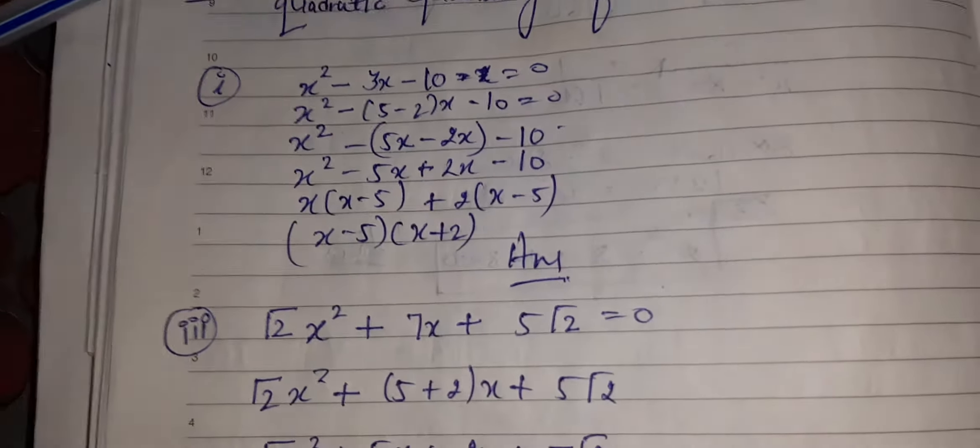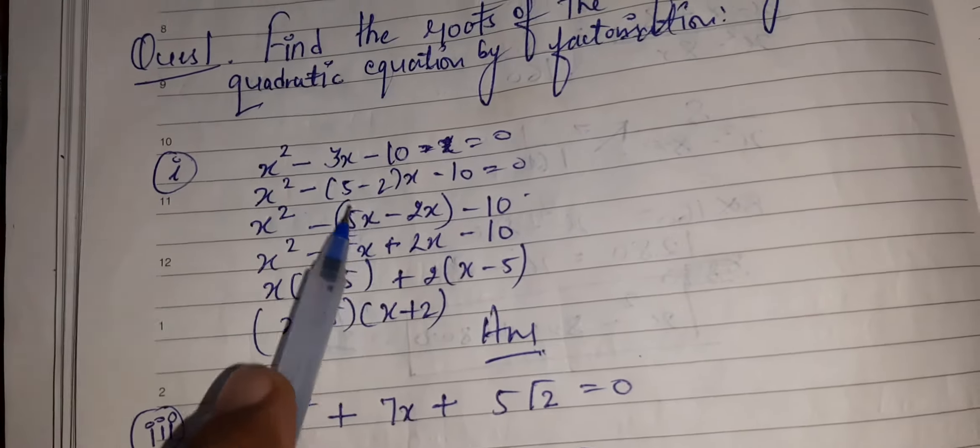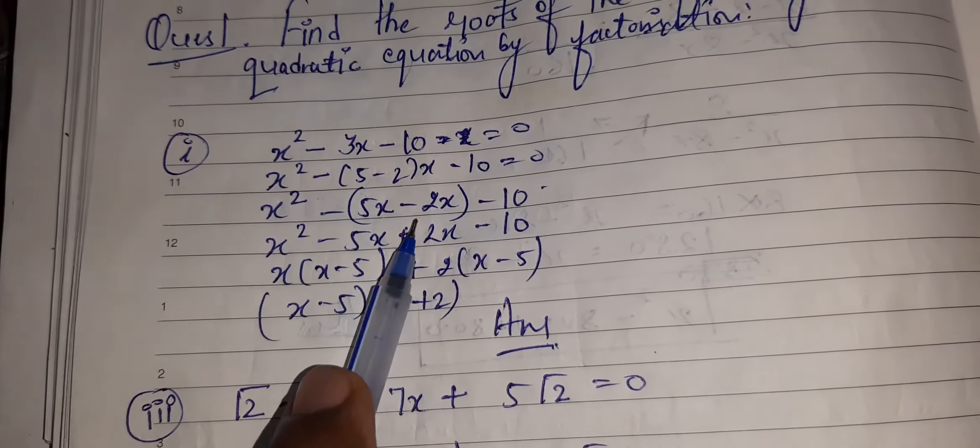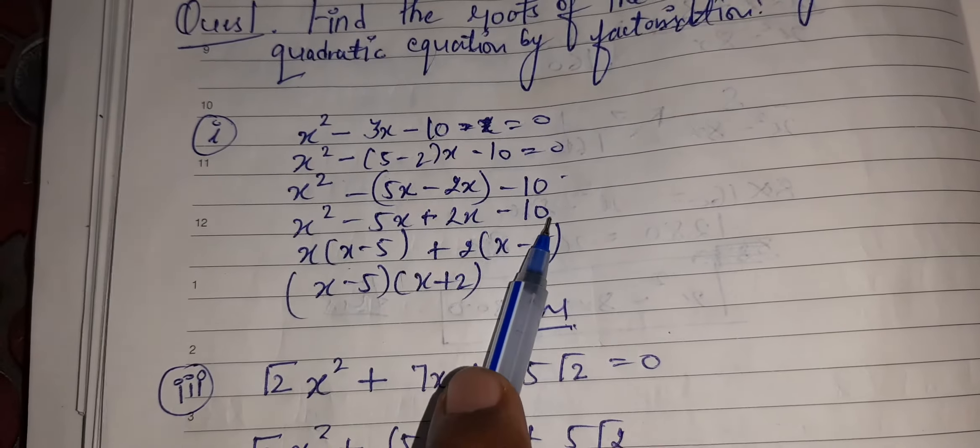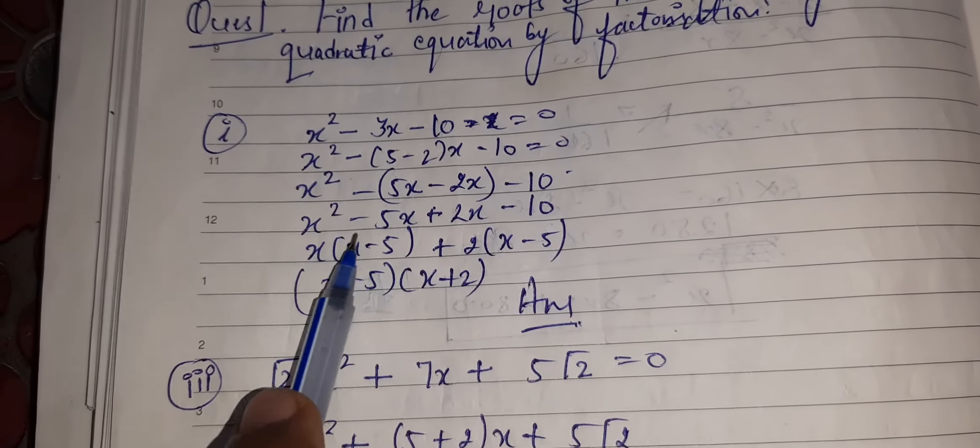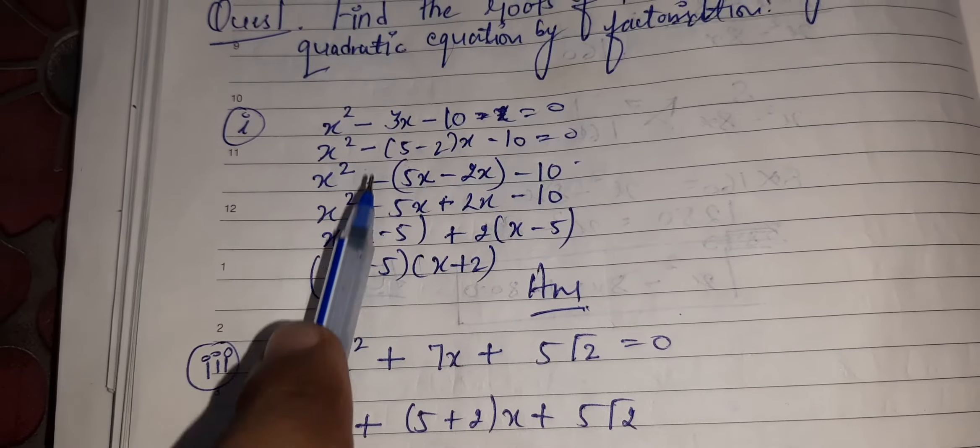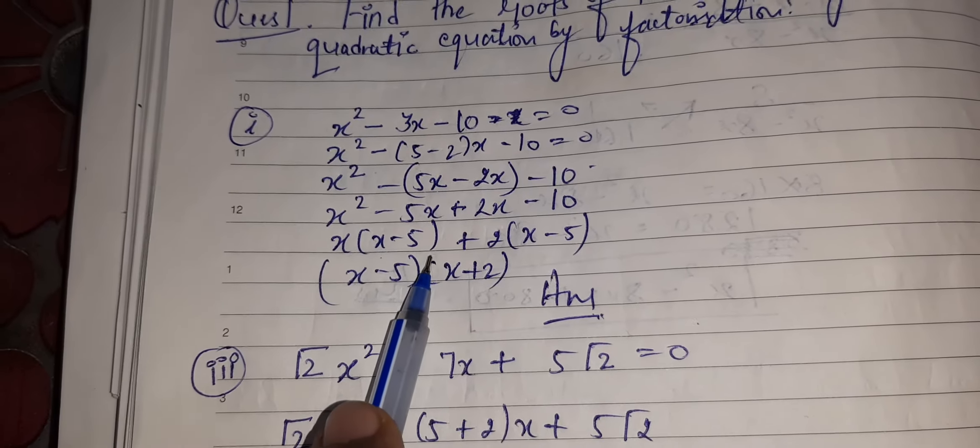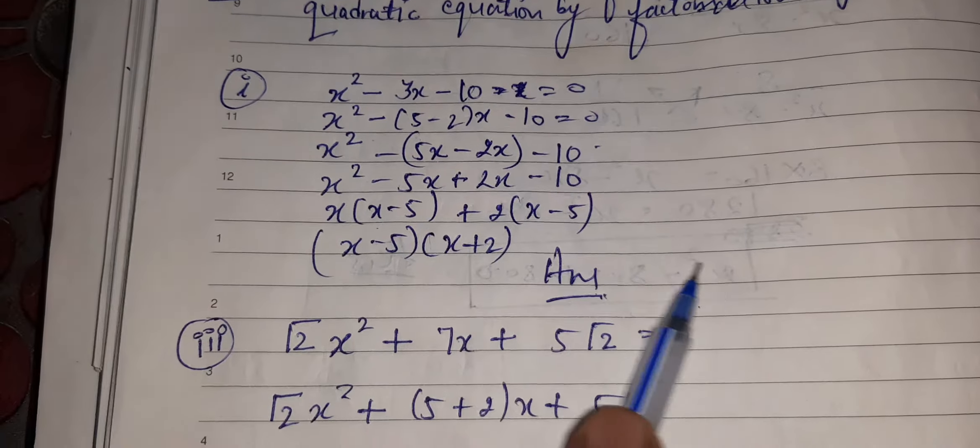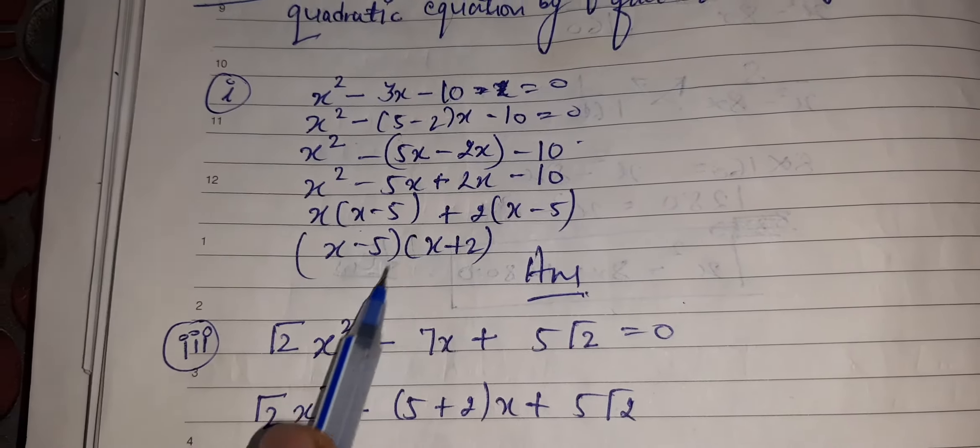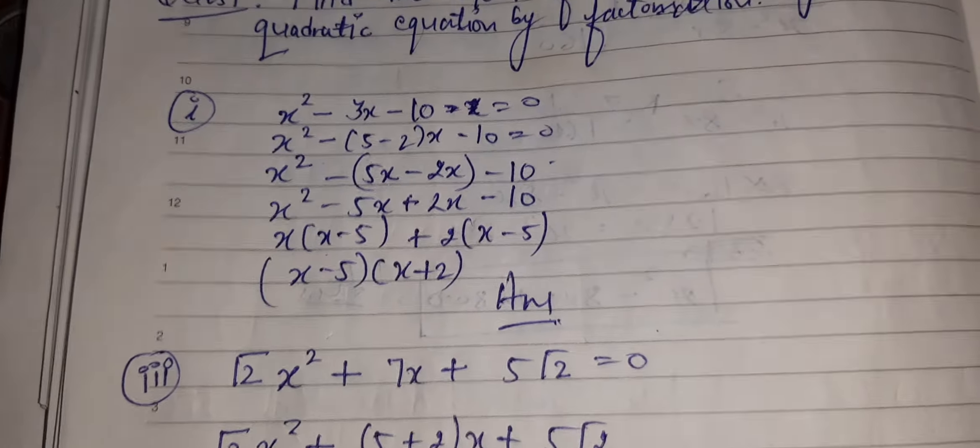Now the minus will go inside. First, x will go inside: -5x - (-2x) becomes -5x + 2x - 10. Taking common from these two and taking common from these two, we have got x as common: x(x - 5) + 2(x - 5). Common in whole: (x - 5)(x + 2). Got it?